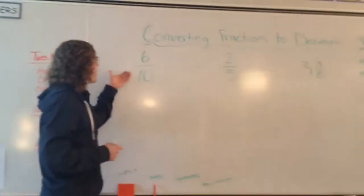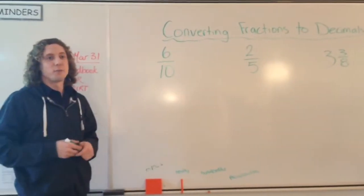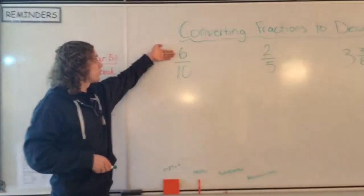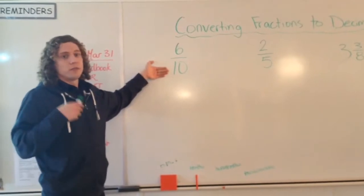So the first thing that you can run into is 6 out of 10. 6 out of 10 is basically saying that you have six parts out of ten.